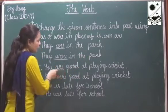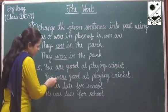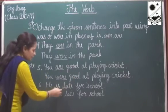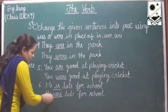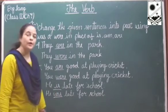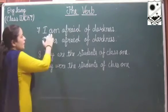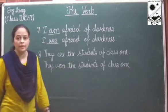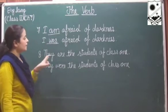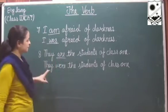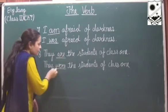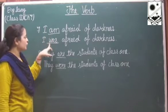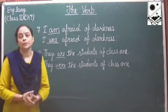You are good at playing cricket - you were good at playing cricket. He is late for school - he was late for school. I am afraid of darkness - I was afraid of darkness. They are the students of class 1 - they were the students of class 1. We have changed am with was and are with were.